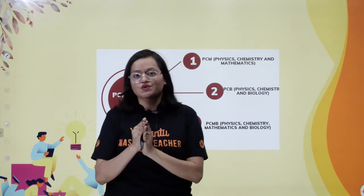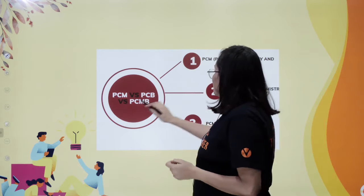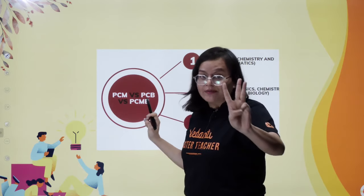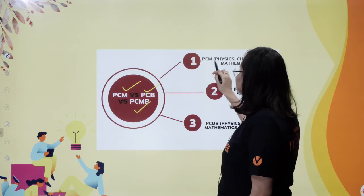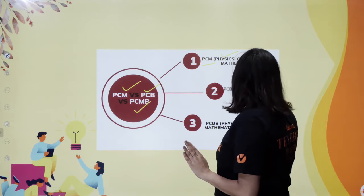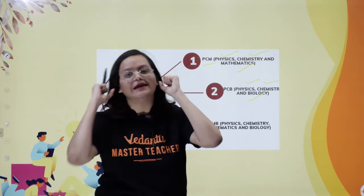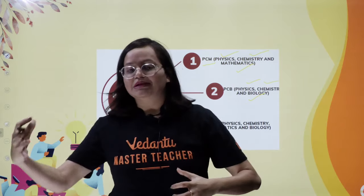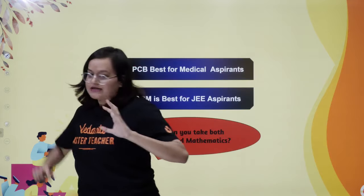Before we compare PCM and PCB, let's see exactly which combination of subjects each involves. We are going to talk about three things: PCM versus PCB versus PCMB. PCM is Physics, Chemistry, and Mathematics. PCB is Physics, Chemistry, and Biology. And if you are very dedicated and want many combinations, PCMB is Physics, Chemistry, Maths, and Biology. So you have these three options.